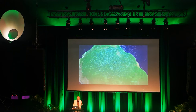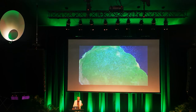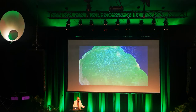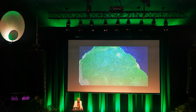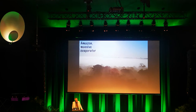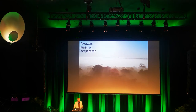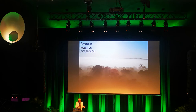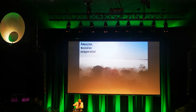That is 3 billion tons of water more than the Amazon River — the largest river on Earth — discharges into the Atlantic Ocean. So you have an Amazon River of vapor upwelling from the forest into the atmosphere. This turns the Amazon into a massive evaporator.